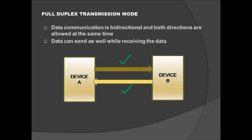In full duplex transmission mode, data transmission is bi-directional and both directions are allowed at the same time. Data can be sent and received simultaneously — device A can send data to device B while also receiving data from it, and device B can likewise send and receive data at the same time. The throughput in full duplex is greater compared to other transmission modes.